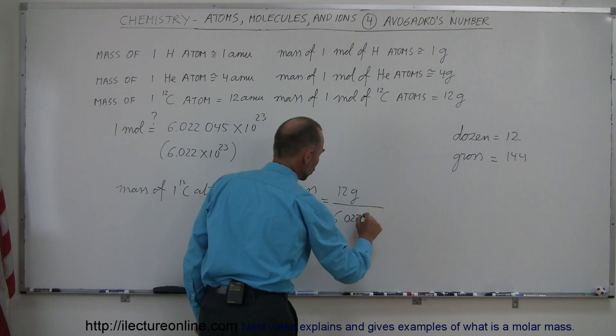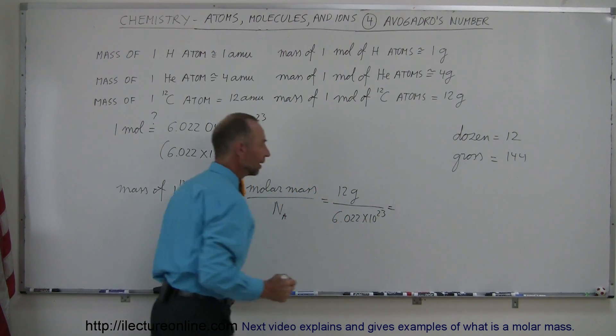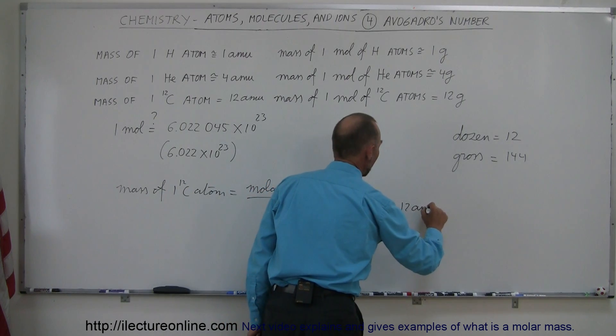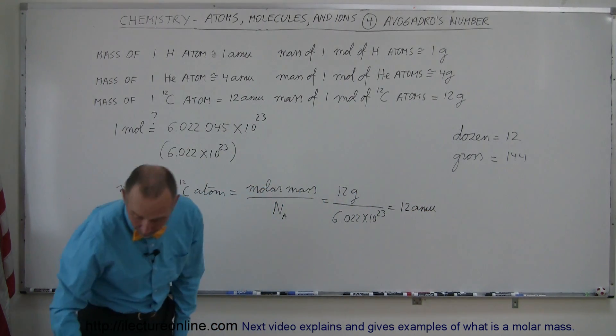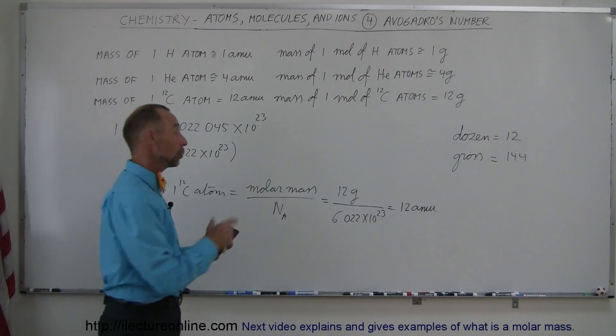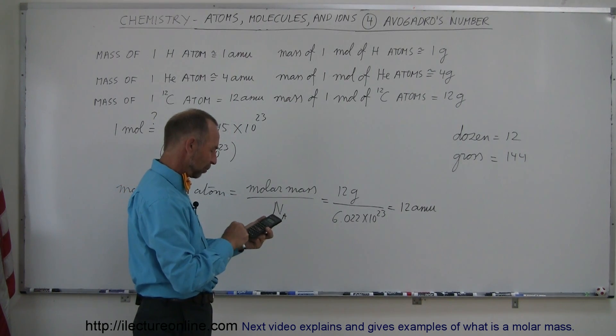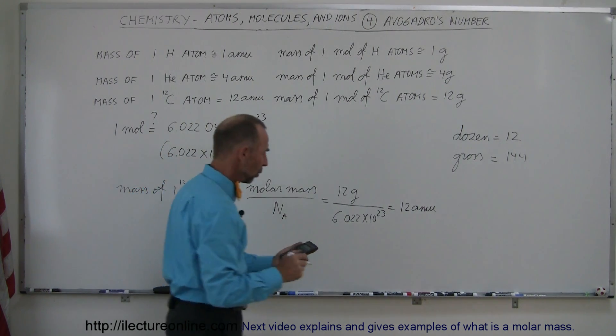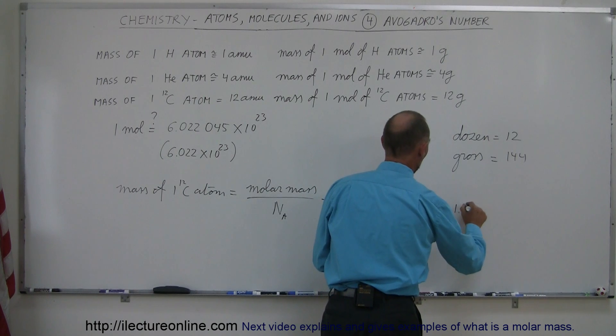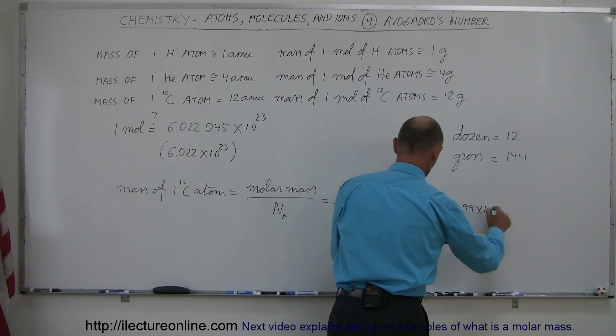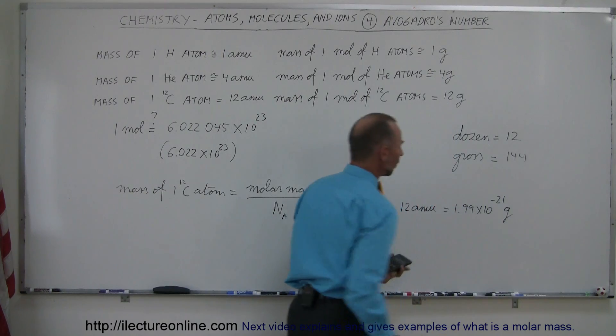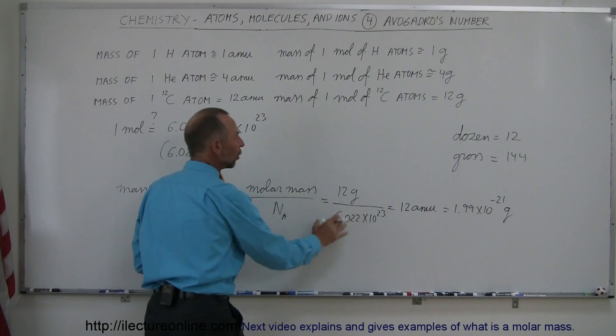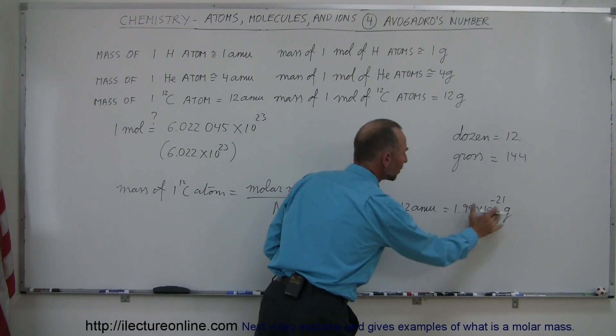which is 6.022 times 10 to the 23, and that is equal to 12 AMUs. Now also, if you want to express that in grams, you take 12 and you divide it by 6.022 times 10 to the 23, and you get that's equal to 1.99 times 10 to the minus 23 grams. So that's also another way of converting the mass of a mole of atoms to the mass of a single atom in grams.